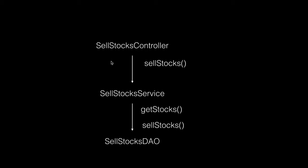Since a transaction can be created at any of these layers, we need to control whether we want to reuse the transaction created in the UI layer inside the service, create a new transaction, or not use a transaction at all. All of that can be controlled using transaction attributes. Typically we start the transaction in the services layer.